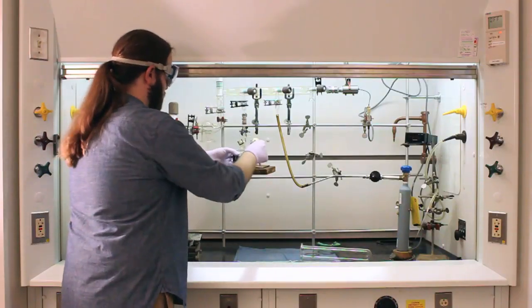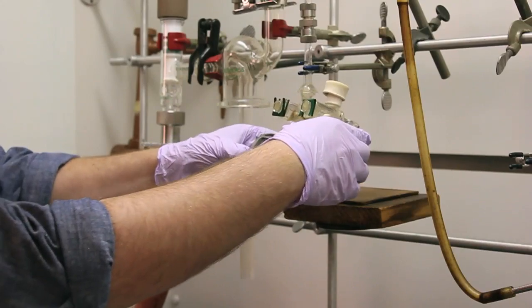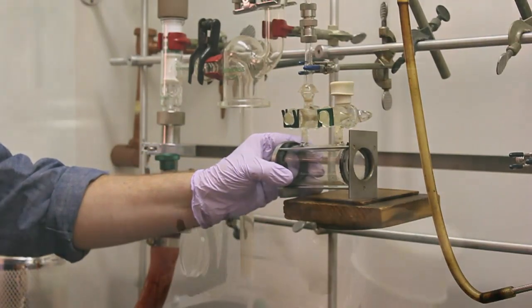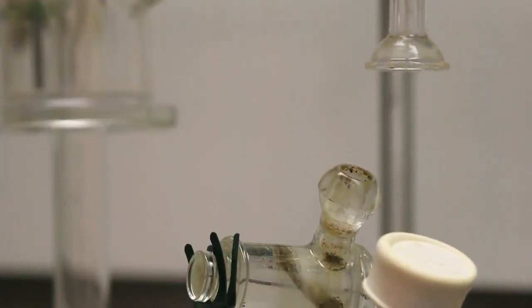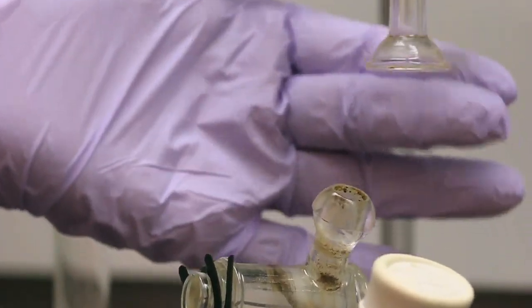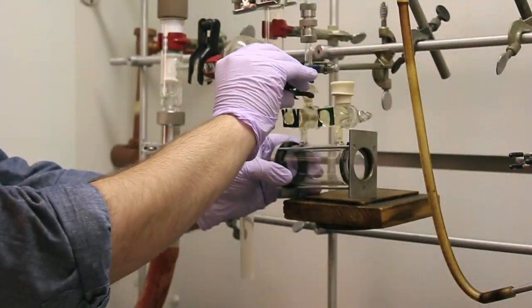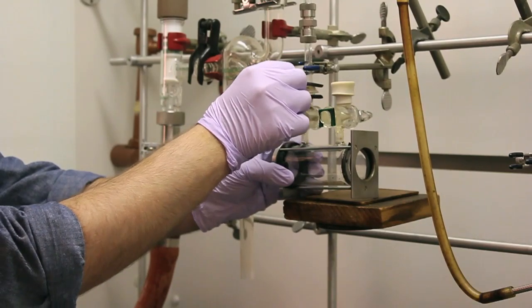First, obtain the sample cell from the instructor and attach it to the manifold. Make sure not to touch the windows. The ball on the sample cell fits into the socket on the port and is held together with a clamp. Make sure to stabilize the cell with the platform.